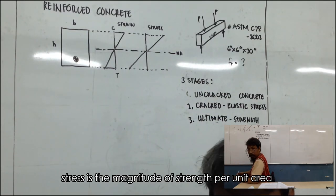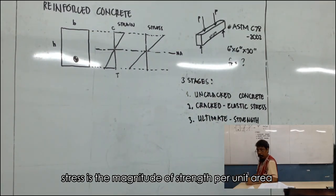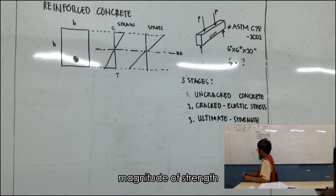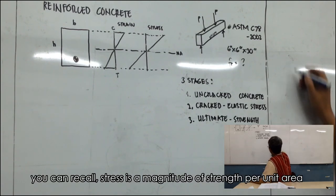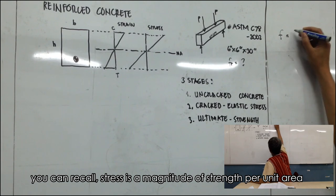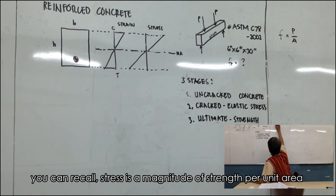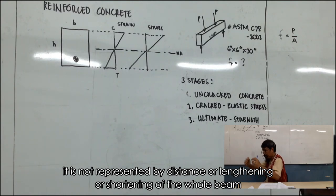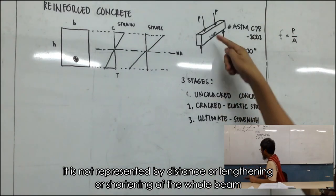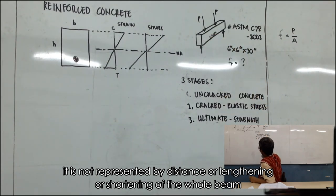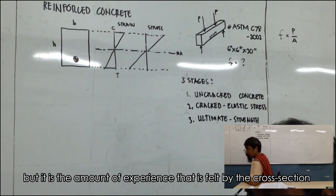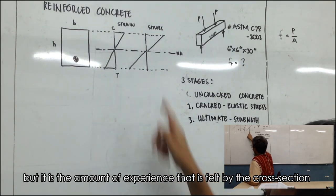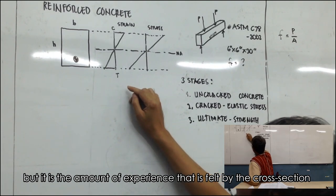Stress is the magnitude of strength in the unit area. Stress is the magnitude of strength in the unit area. It is not represented by distance or lengthening or shortening of the whole beam, but it is the amount of experience that is the field, like the cross section.